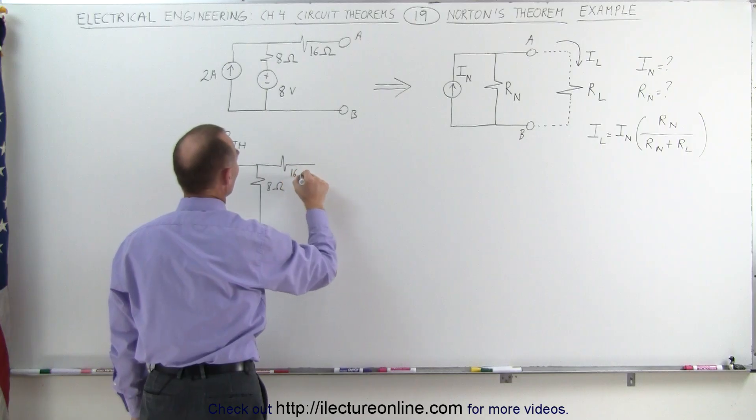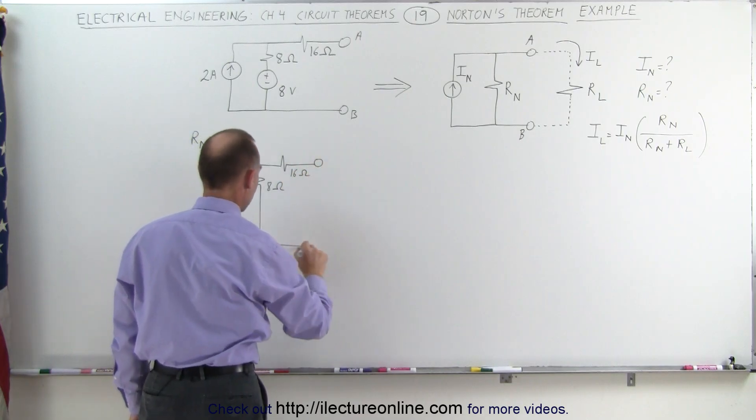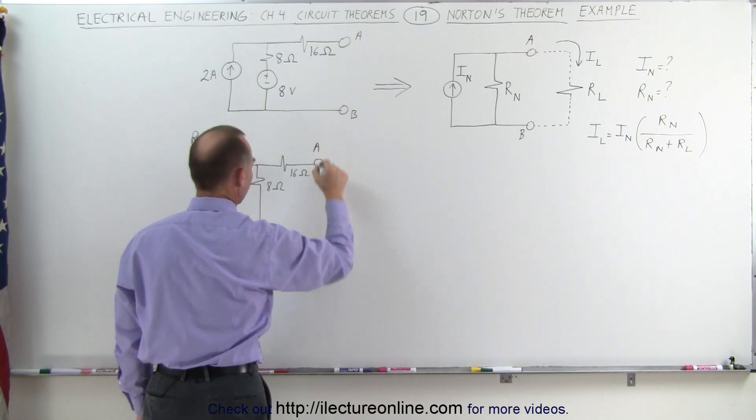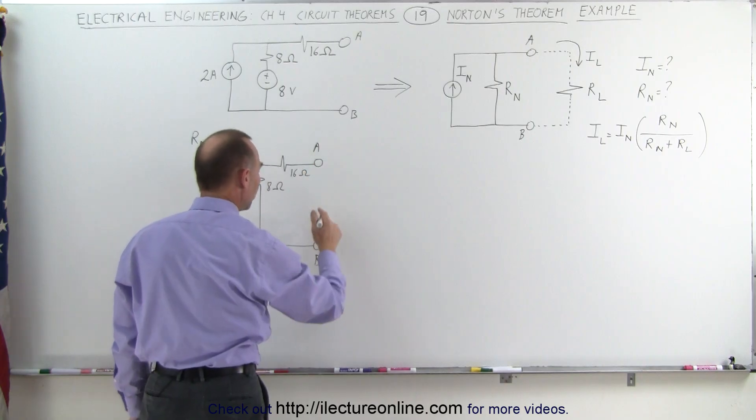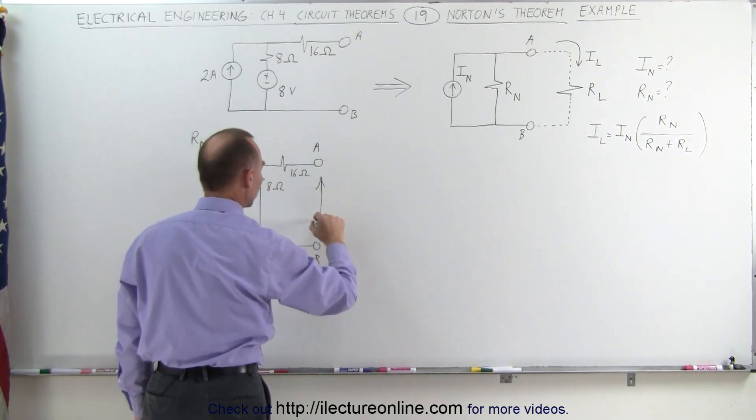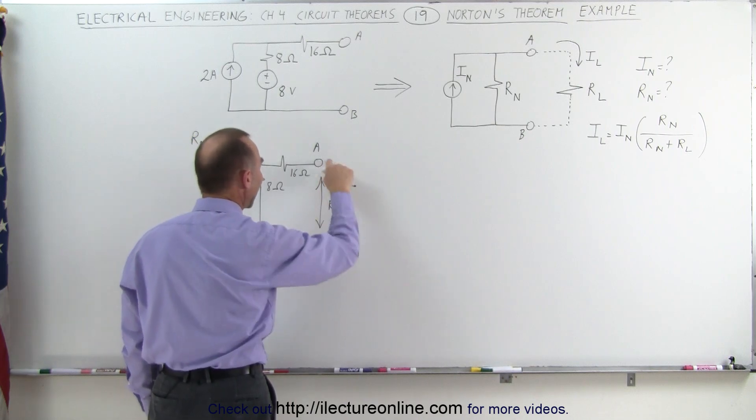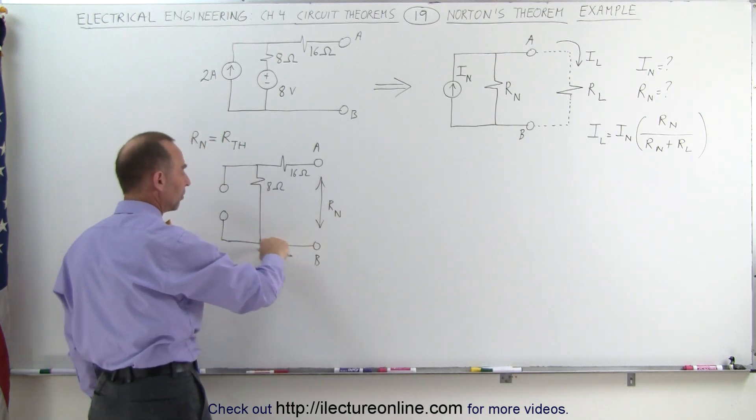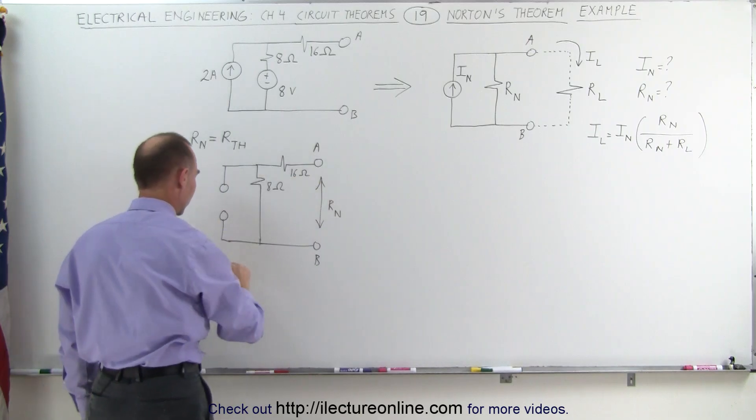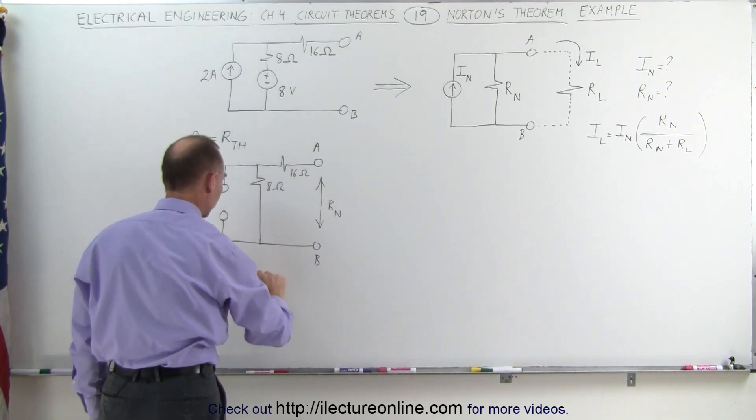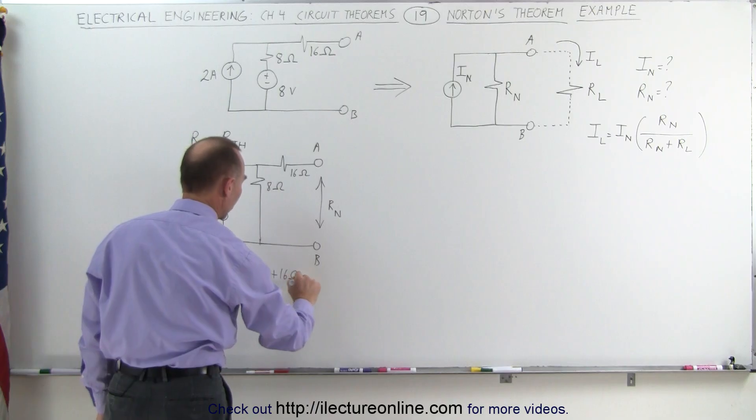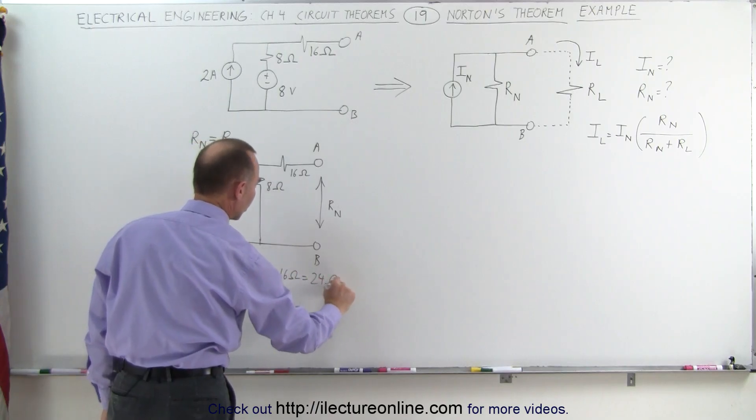the voltage source goes to zero so we can just skip that and then we have the 16 ohm resistor there, 8 ohms, 16 ohms. Here we have terminal A and terminal B. We leave it open and the resistance, the Norton resistance can be found by simply measuring the resistance between A and B, which in essence will simply be the sum of these two resistors. R sub n will be equal to 8 ohms plus 16 ohms which is 24 ohms.